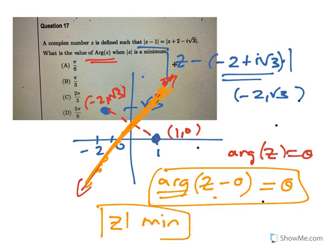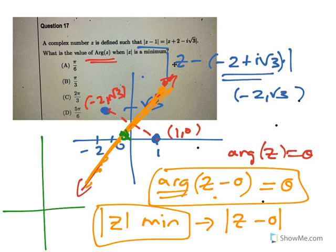When z is at its minimum distance, that would be the minimum distance z is from the origin. The minimum distance z is from the origin is this distance here. It is actually the perpendicular distance.